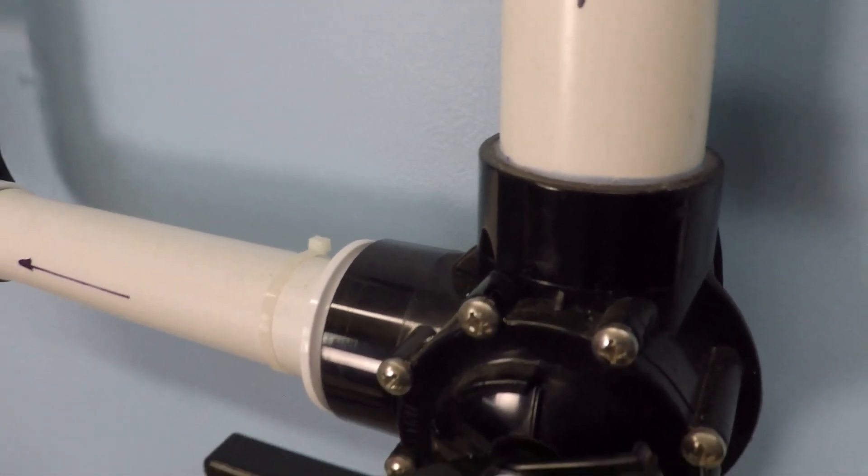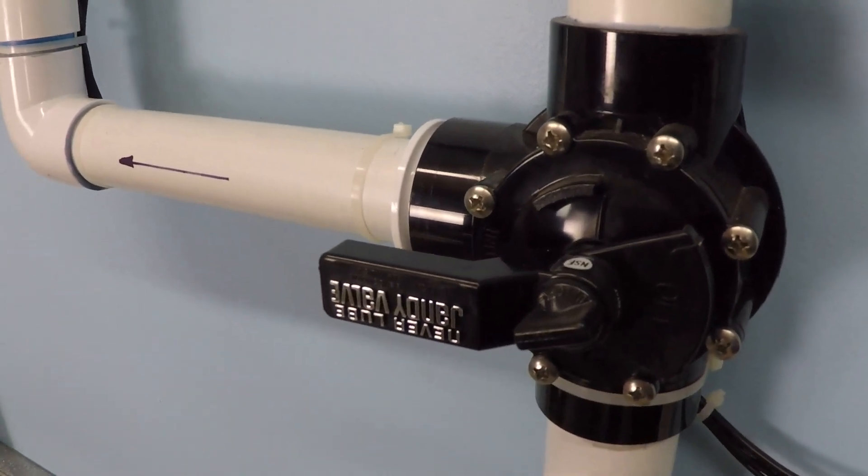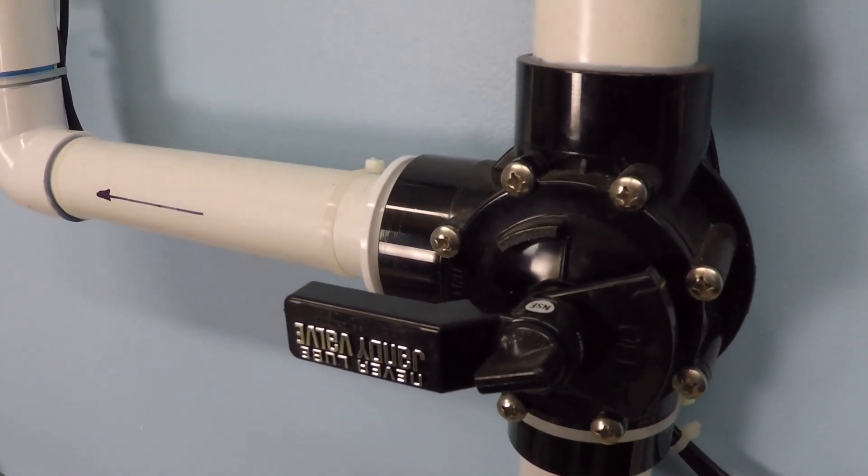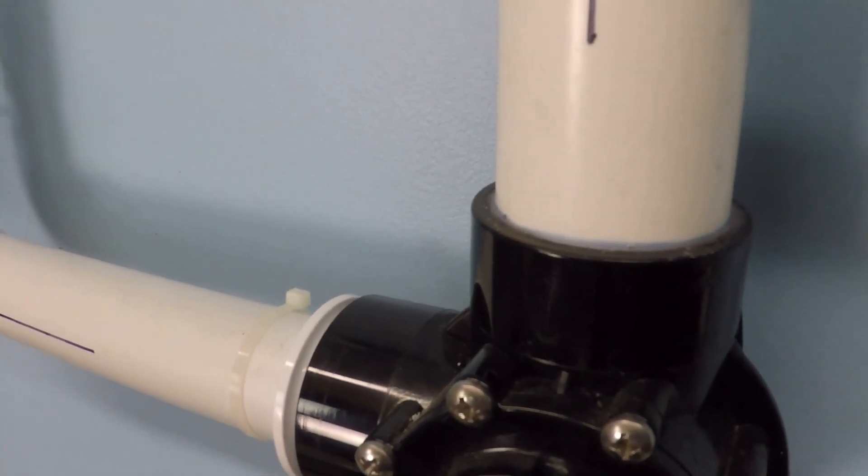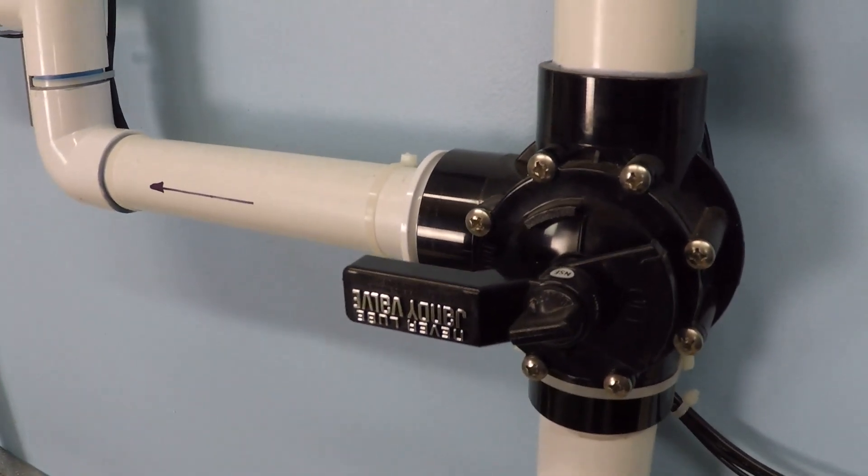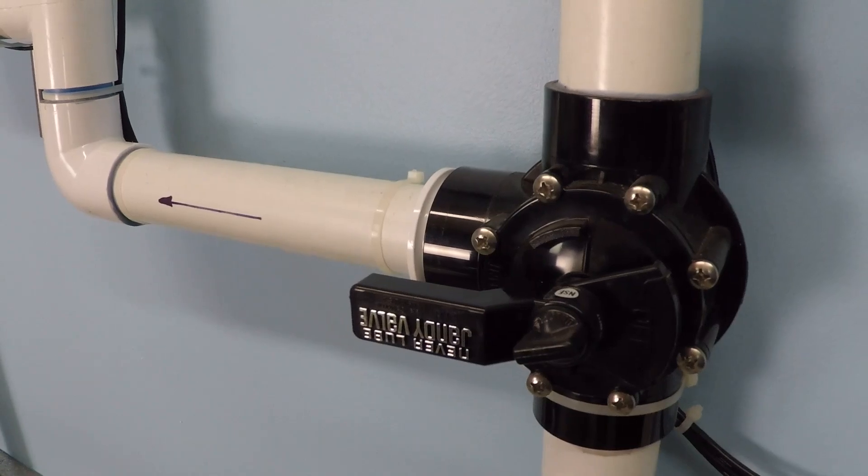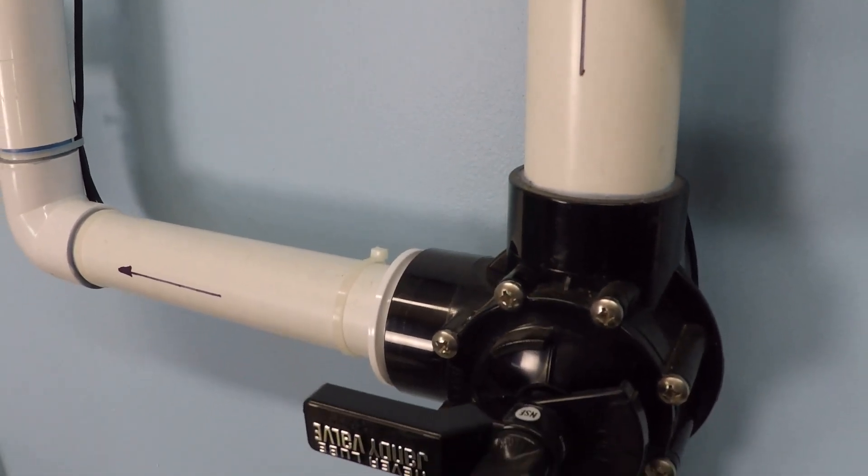And if you want the heat tolerance to also include the joint that you're gluing into the valve as well as the valve itself, then you would need to specifically use a CPVC solvent cement in order to make it a heat-rated connection.